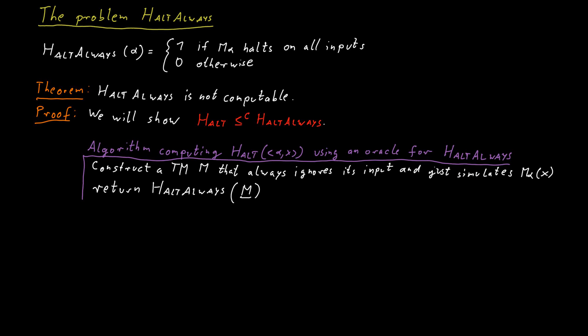It's easy to see that the machine will do the same thing for every input. That is because it ignores its input and then just simulates M_alpha on X. So it will always do the same thing, and it will not halt if M_alpha does not halt on X, and it will halt in all other cases.